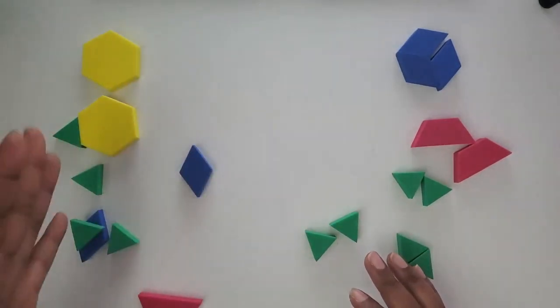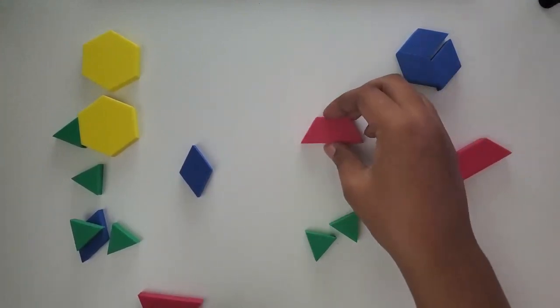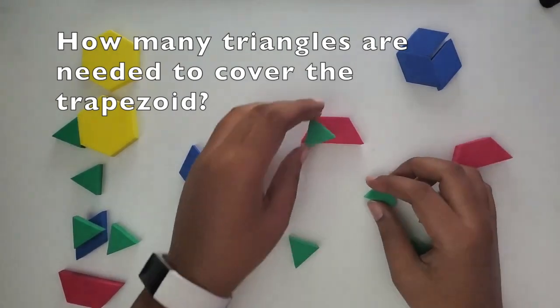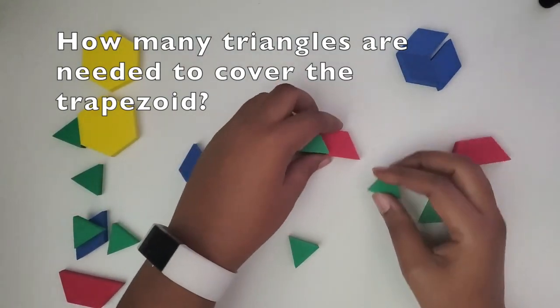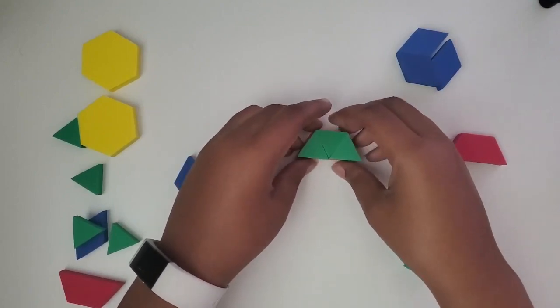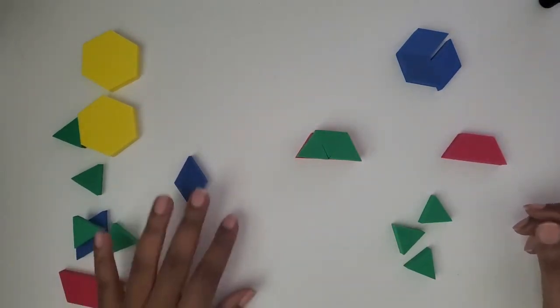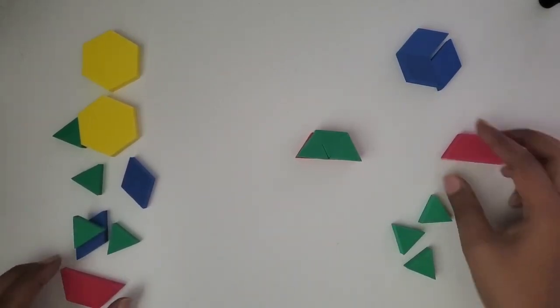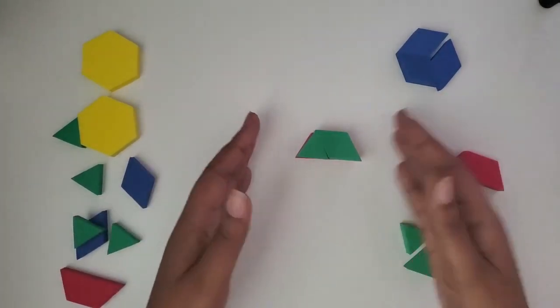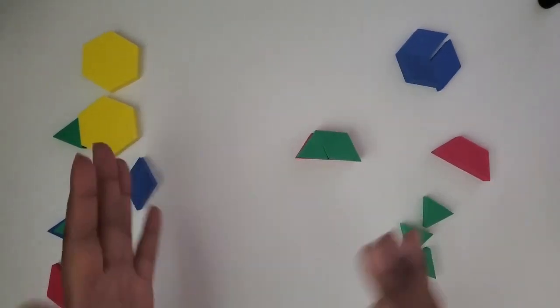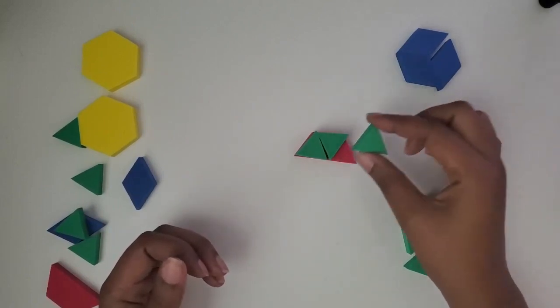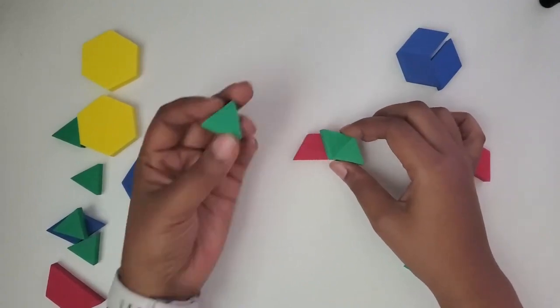So if we move the hexagons out of the way and we made the trapezoid our whole, how many triangles do we need to cover that trapezoid? I can see that we need three triangles to cover the size of that trapezoid. So now, because the trapezoid is one whole, we've switched the size of our whole. Now these triangles represent what size pieces? Now they represent a third.